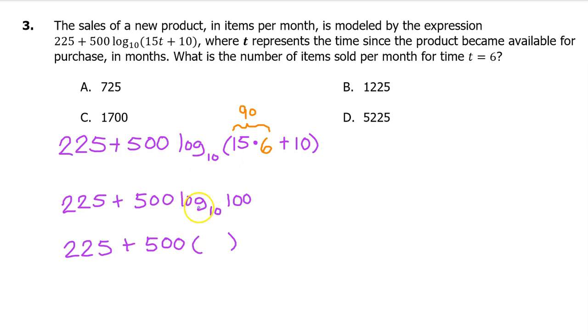What's the value of log base 10 of 100? Well, 10 to the second power is 100, so the value of the expression is 2. 500 times 2 is 1000, so this is going to be 225 plus 1000, which of course equals 1225. That's why the answer is B.